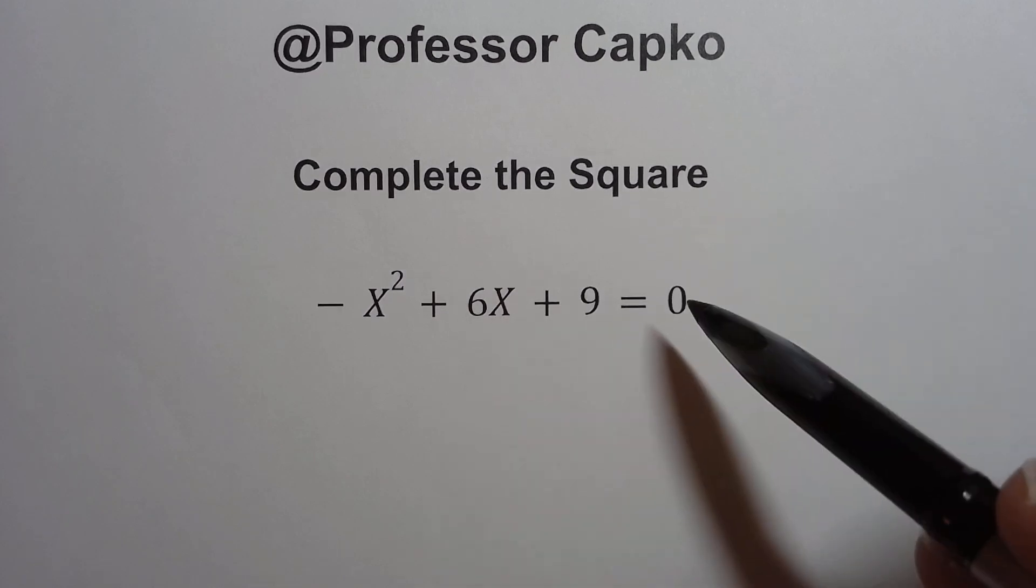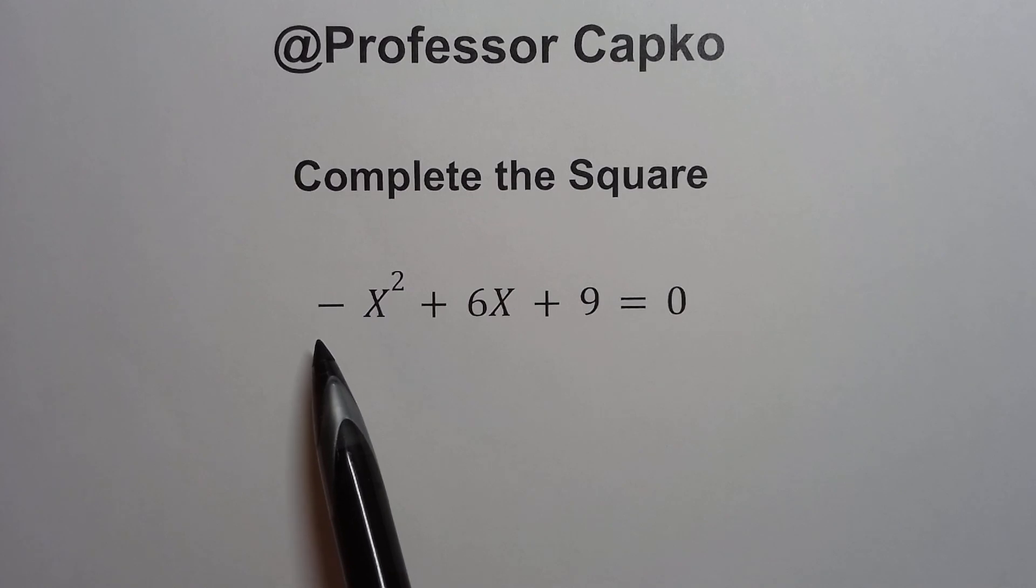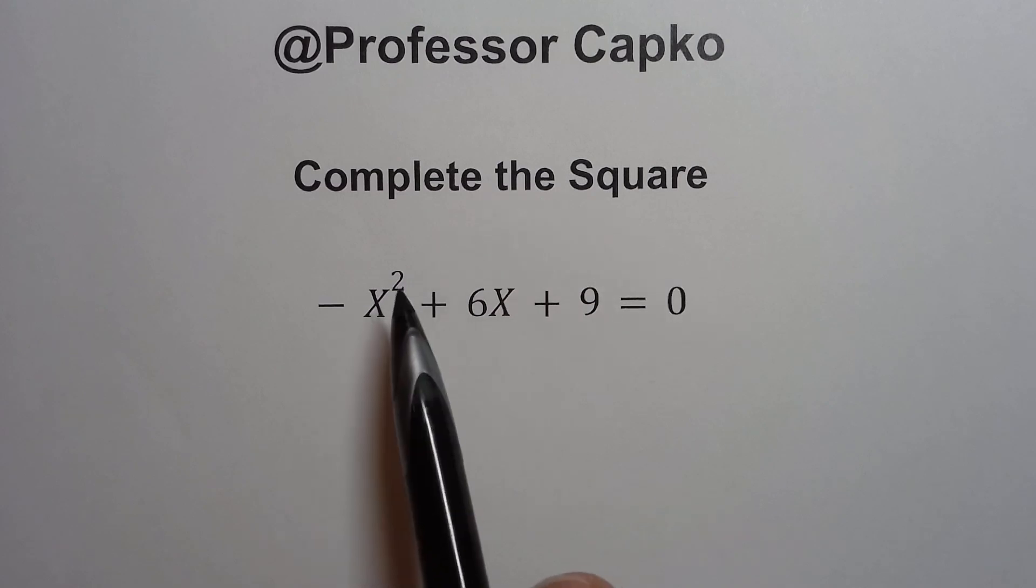And in this one, we're going to do it slightly differently. We're going to do the same technique, but in this case, we're solving for x and the coefficient in front of the squared term is a negative. We've got a negative coefficient out here in front of the squared term.